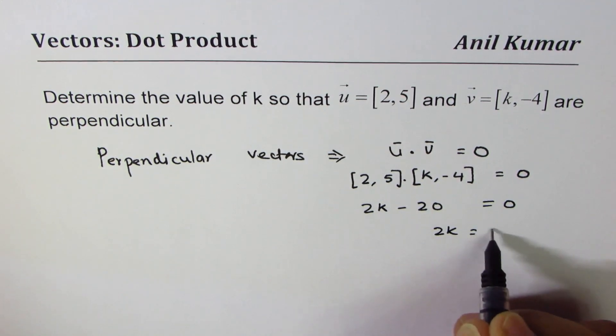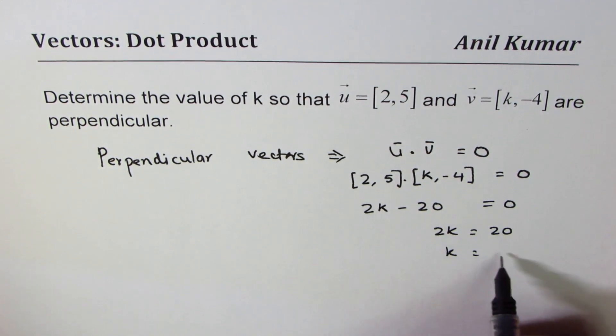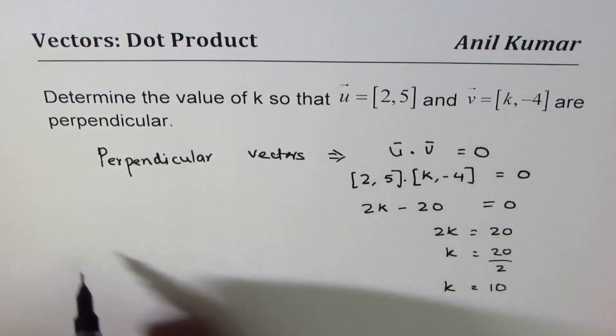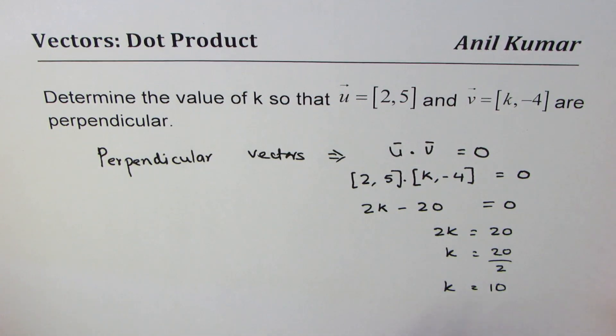Or we can say 2k equals to 20. K equals to 20 divided by 2, or k equals to 10.